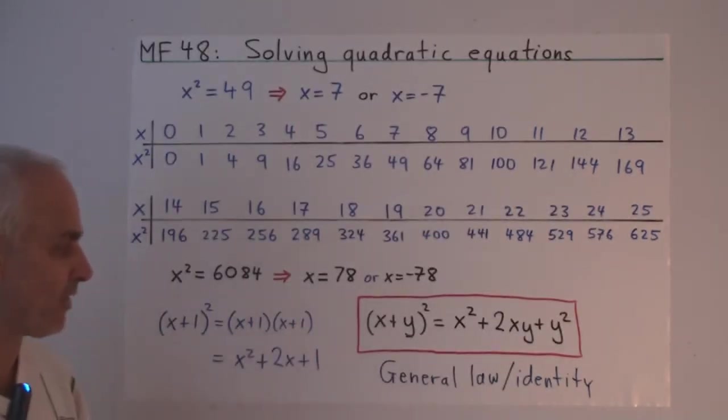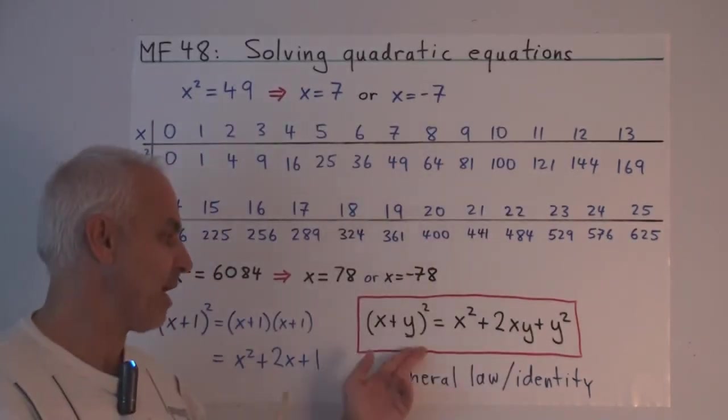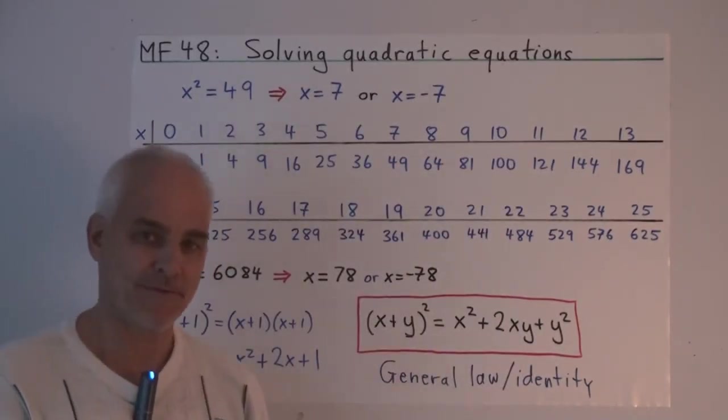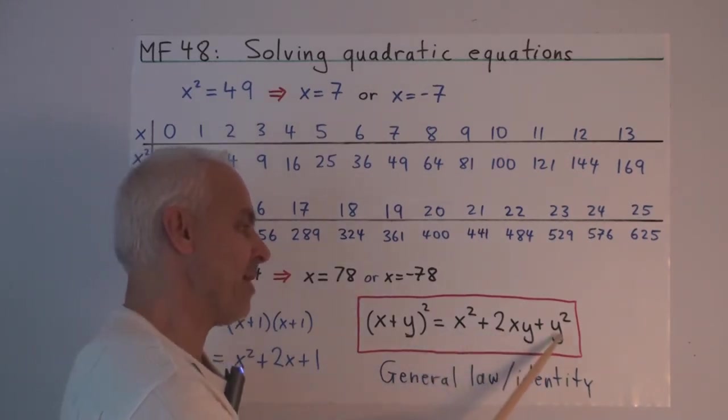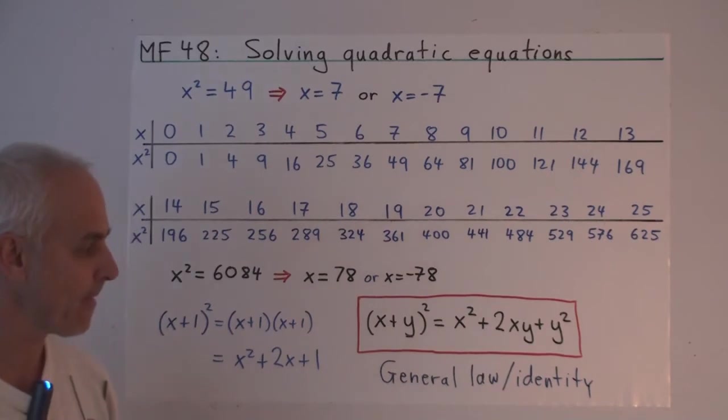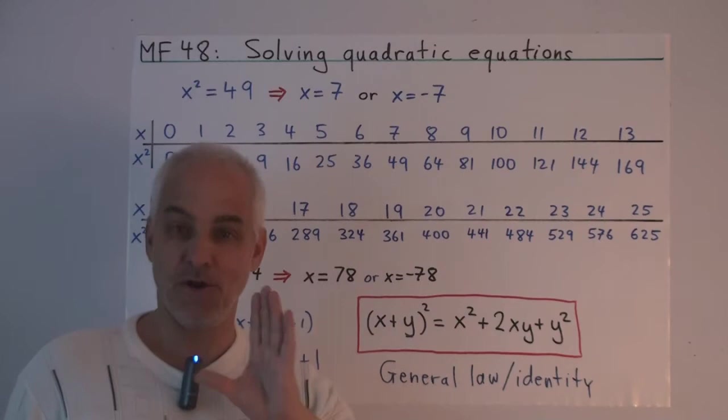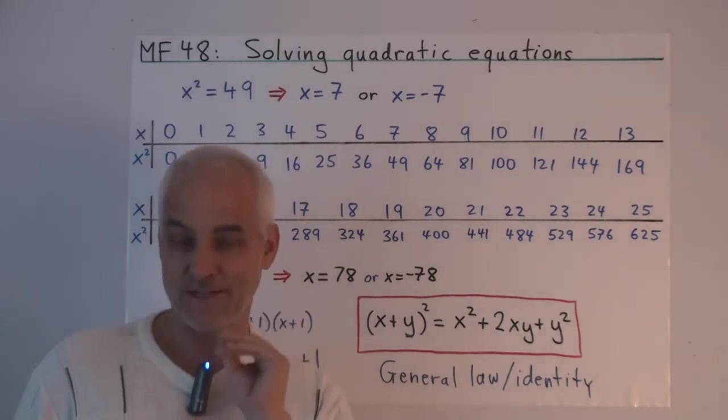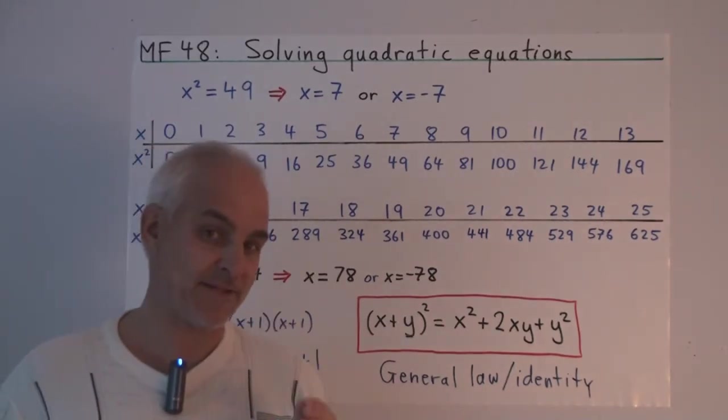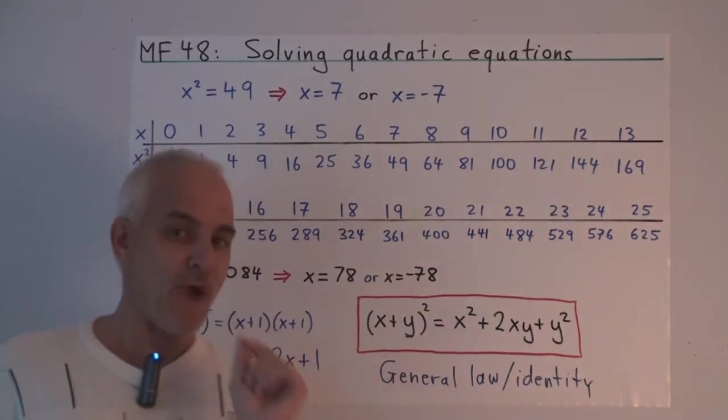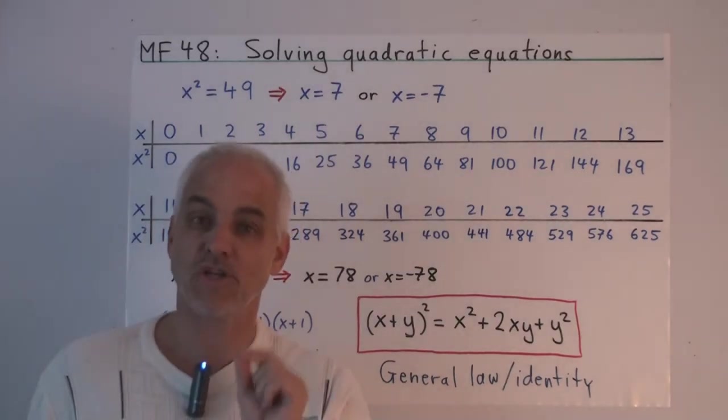And this identity has an important generalization when we replace the one with a general y. x plus y all squared. And all students of algebra learn that this is x squared plus 2xy plus y squared. And here we're already seeing a kind of a change in our use of the variables x and y. When I write down this equation, I'm no longer thinking of x and y as unknown quantities.